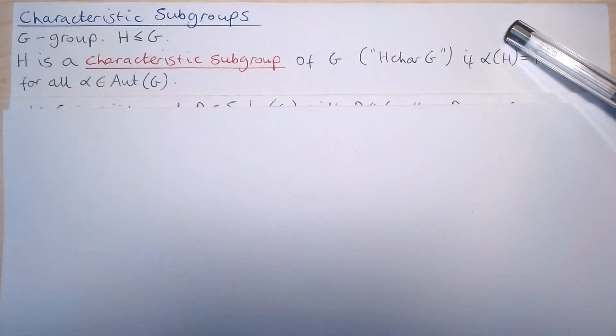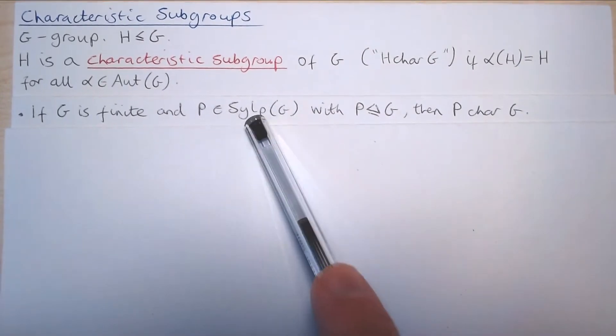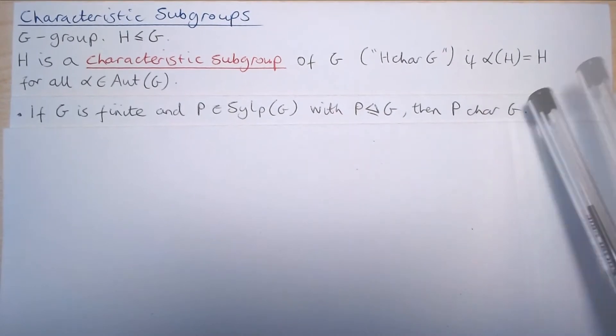For our final example, we will show that if G is a finite group and P is a Sylow P-subgroup of G with P normal in G, then P is characteristic in G.